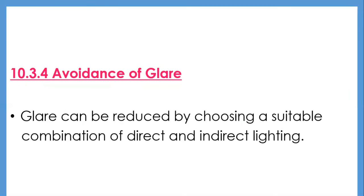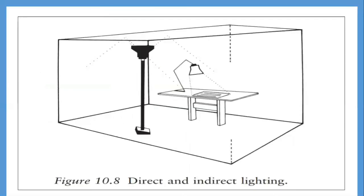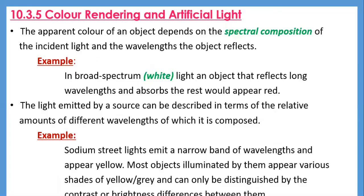Figure 10.8 shows a lamp on a working table as an example of direct lighting — most of the light is directed towards the target in the form of a cone, producing hard shadows and sharp contrasts between illuminated and non-illuminated areas. Indirect lighting is reflected off other surfaces in a room, producing a smoother transition between surface luminances and reducing shadows. The next subtopic is color rendering and artificial light.